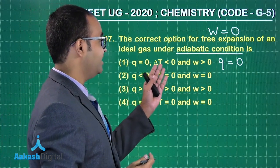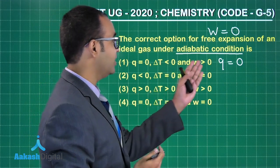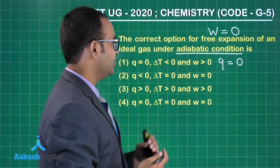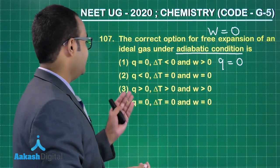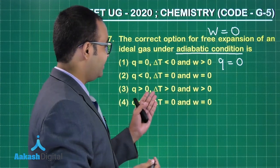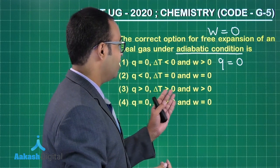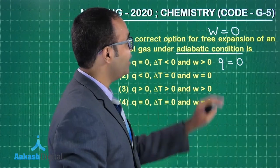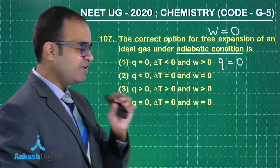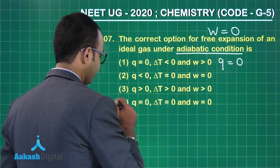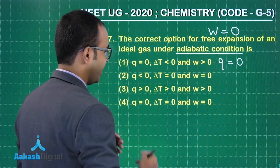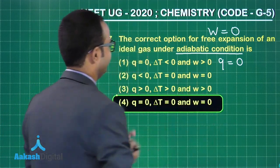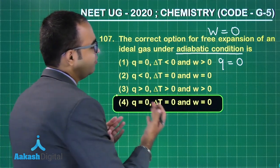q is equal to zero, ΔT less than zero and w greater than zero. q is less than zero, ΔT is equal to zero, w is equal to zero. q is greater than zero, ΔT is greater than zero and w is greater than zero. So where do these things fit? It fits in option four. So the answer is option four.